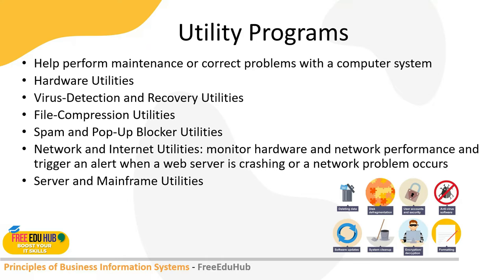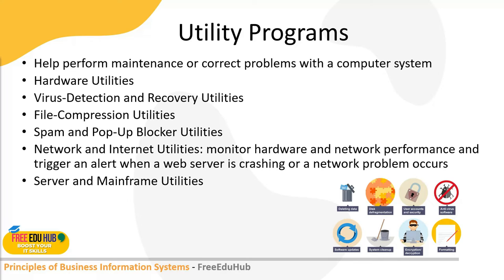Network and internet utilities monitor hardware and network performance and trigger an alert when a web server is crashing or a network problem occurs. These utilities keep an eye on the overall functions of different applications on the network. As soon as a network problem is detected — such as a server performing poorly or losing connection to storage — an alert is triggered so administrators can take appropriate action, ensuring high availability of applications.